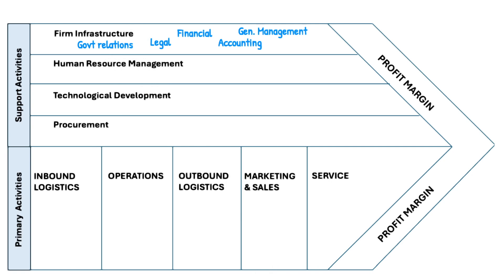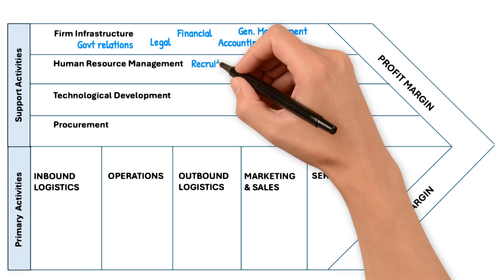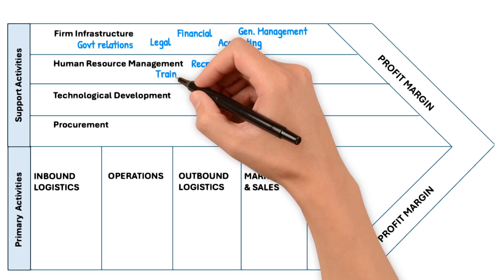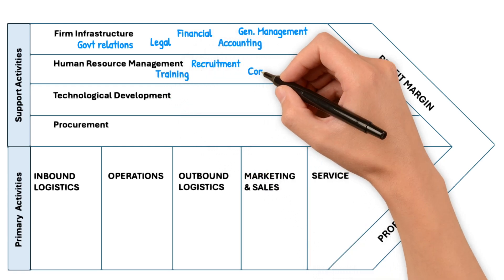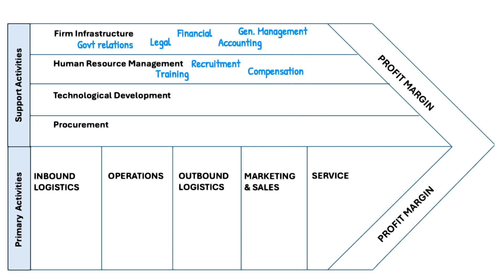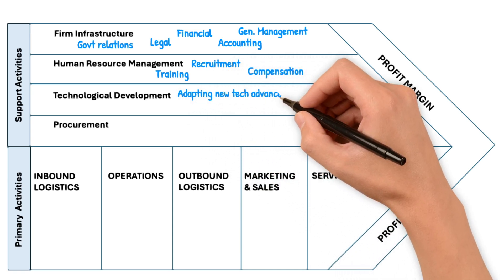So this is how we address a company's infrastructure, including all the important areas. The second support activity is human resource management. This is about managing human resources: staffing, recruitment, employee compensation, training, and all other related parts. This is equally important to sustain your organization because we know that employees are the most valued asset.